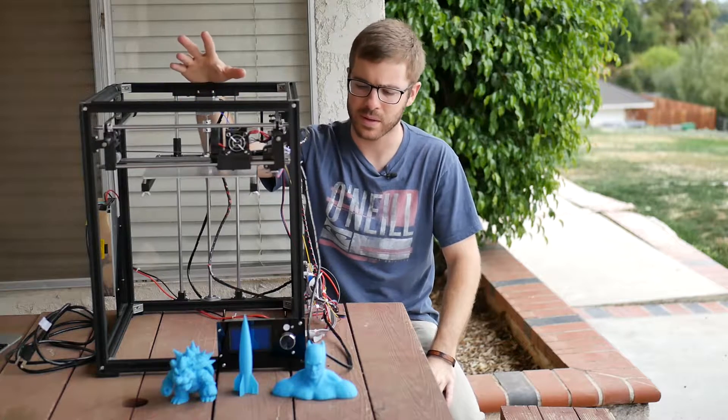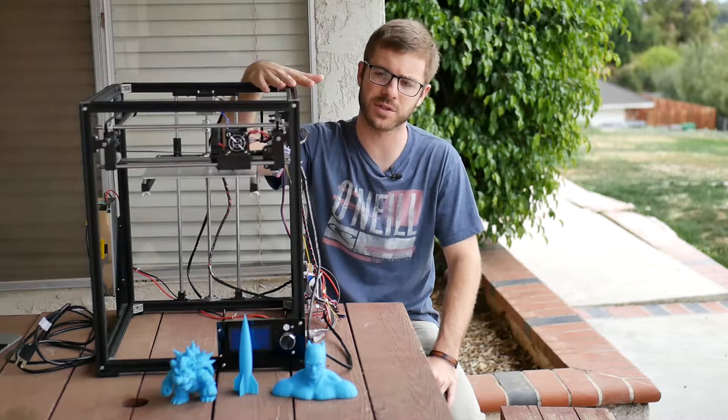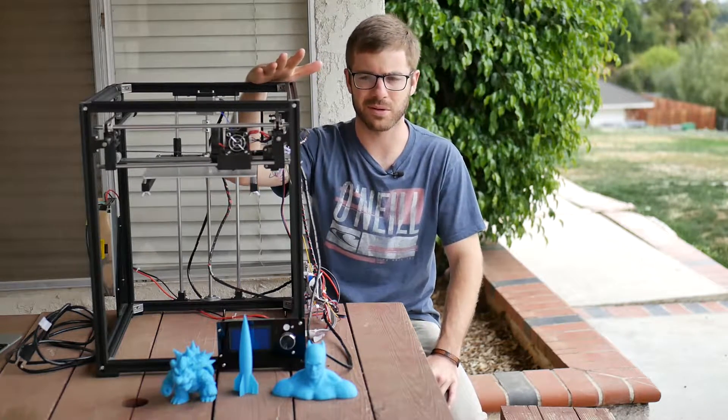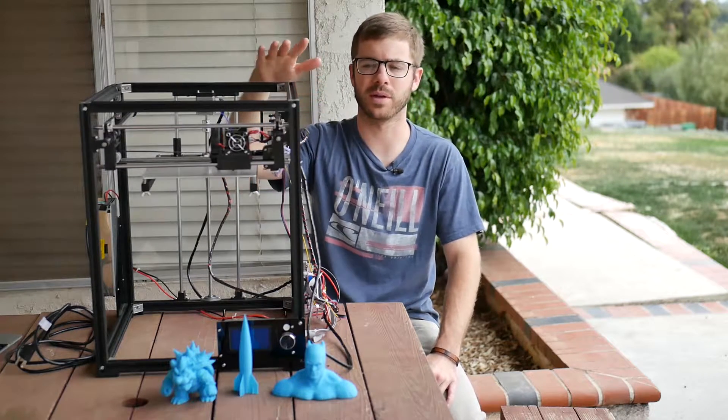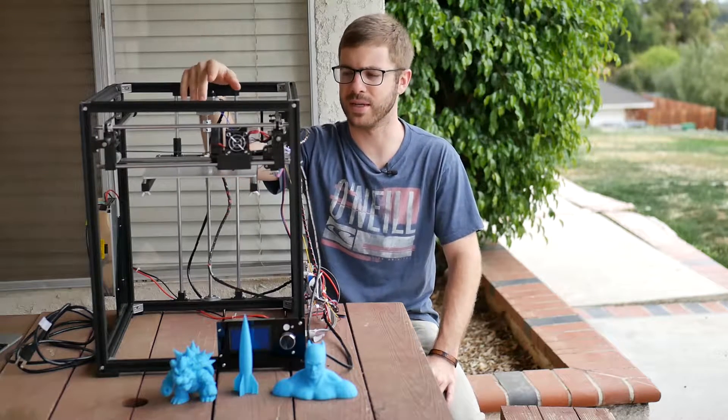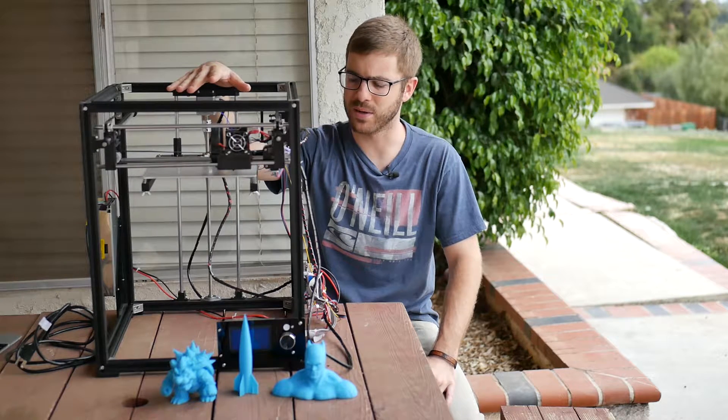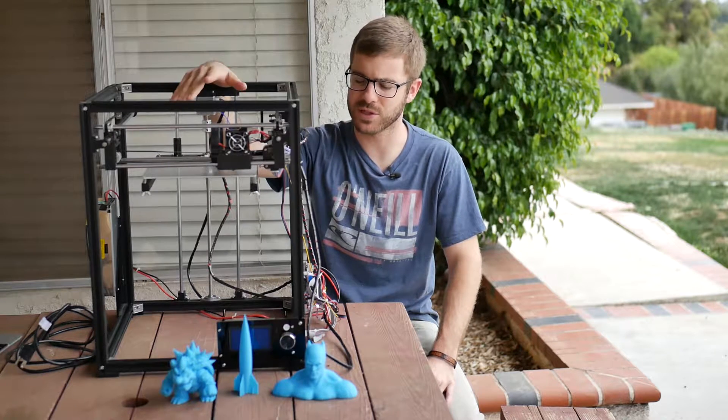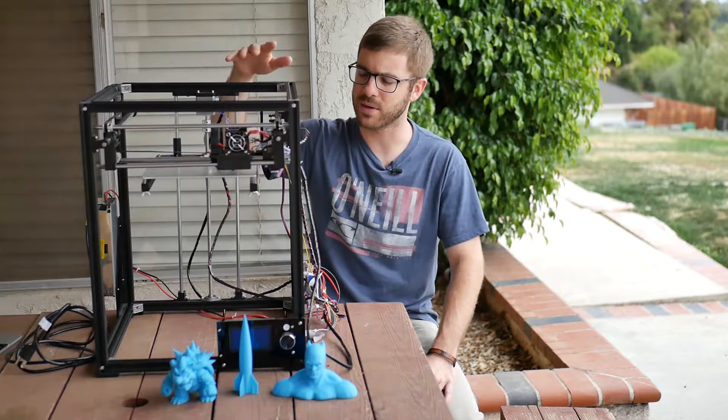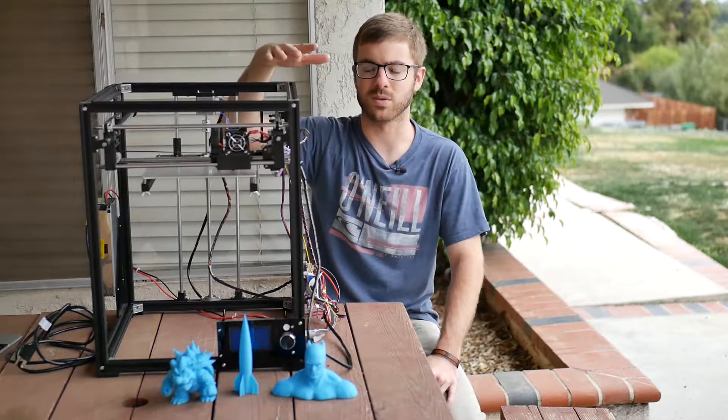It's probably been out for at least a year or so now and there's actually a completely updated version of it which is the Tronxy X5S which goes for about $350. This machine you can actually pick up for $200 but the X5S is a completely overhauled core XY version, while this machine is more along the lines of a DaVinci style printer or an Ultimaker style printer where the bed goes up and down and the hot end goes left and right and back and forth on the X and Y axis.